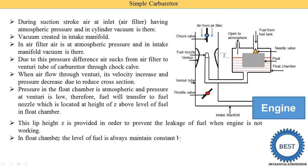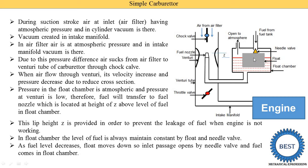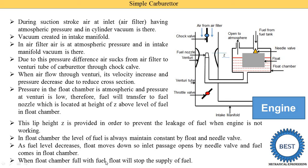When low pressure is created at the nozzle, fuel is supplied and the level of petrol is reduced in the float chamber. The level of fuel in the float chamber is always maintained constant using the float and needle valve. The float floats on the fuel level. As the fuel level decreases, the float moves downward, the needle valve opens the pipe, and fuel enters the float chamber. When the fuel level is restored, the float moves upward, the needle valve closes the pipe, and fuel supply stops.